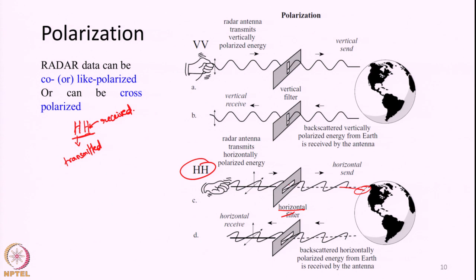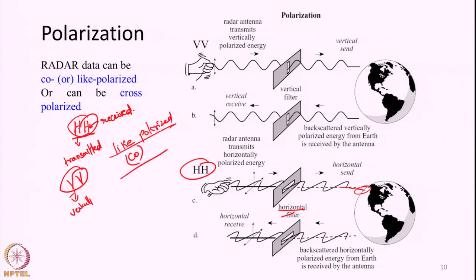This system is receiving only horizontally polarized EMR and hence we label it as HH polarization. Similarly, some systems can be VV — transmit vertically polarized signal and receive vertically polarized signal alone. Such systems in which both the transmitted signal and the received signal have the same polarization are called like-polarized or co-polarized. Certain systems are capable of transmitting in one polarization and receiving in the other polarization — HV or VH. Transmission is H and reception is V, or transmission is V and reception is H. Such systems are called cross-polarized.